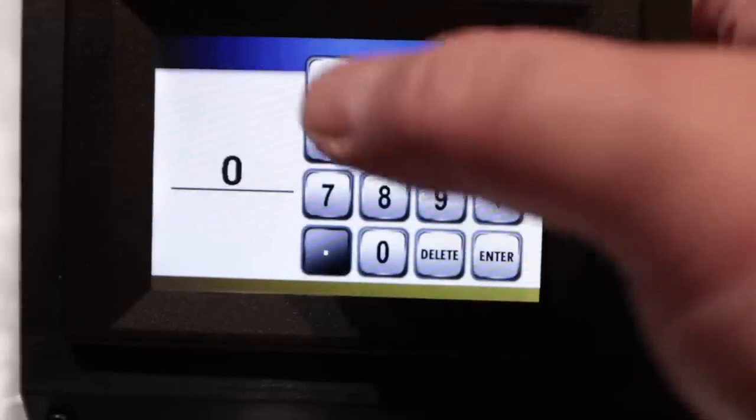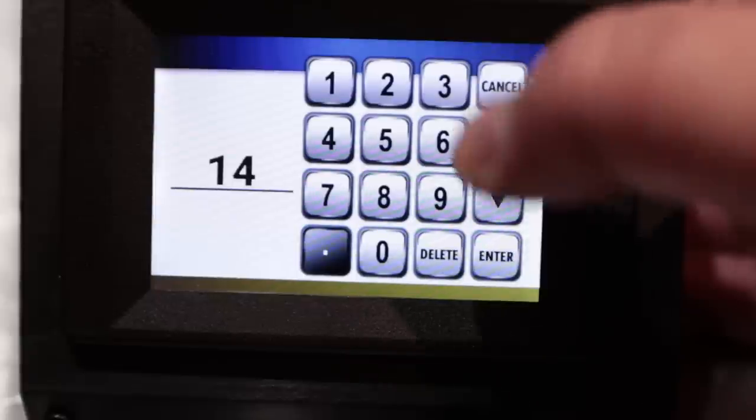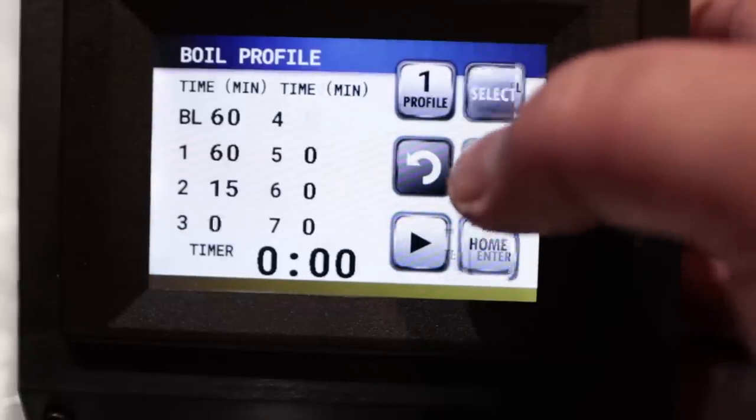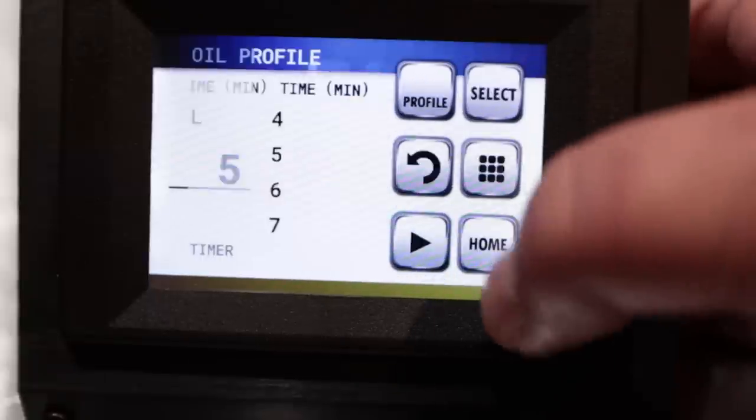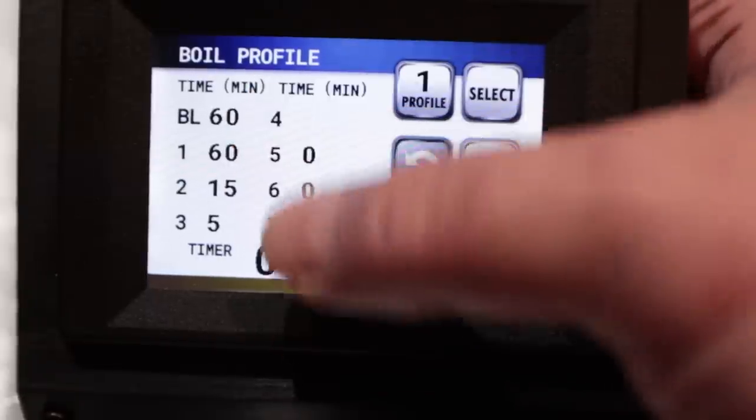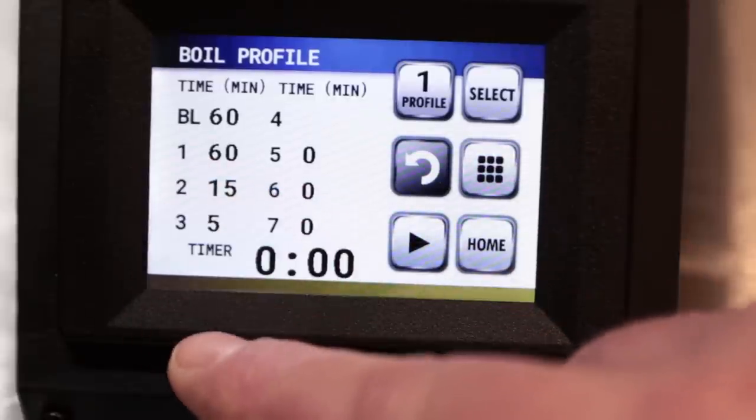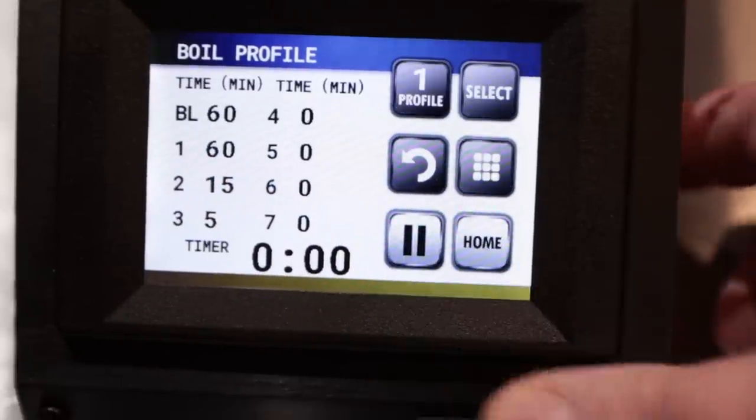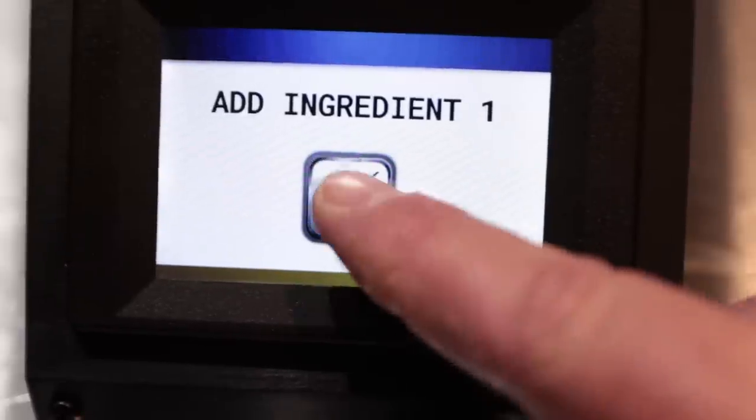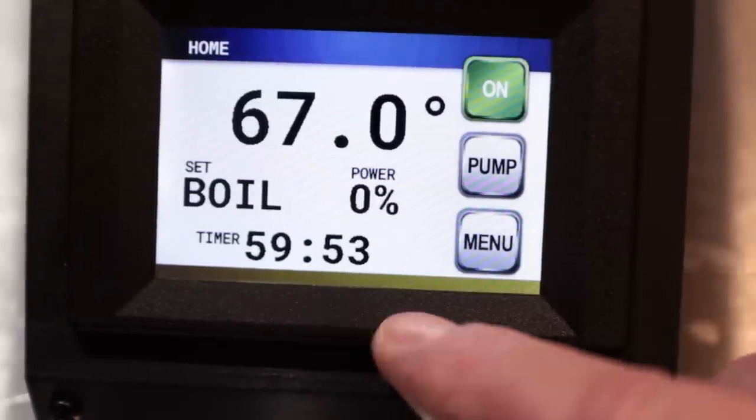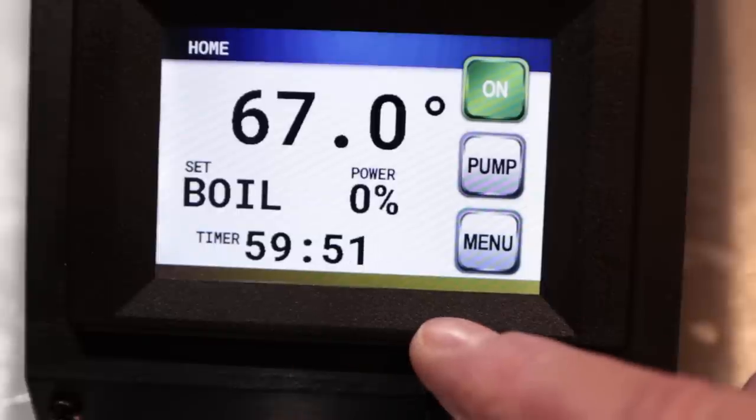It will actually keep track of the boil length as well as notify you when you need to put these additions in. After you hit the start timer, it'll say to add the first ingredient and then it'll begin counting down. It will tell you at whatever intervals you set to add the ingredients. And when the boil is complete, you'll get a message that says boil complete.